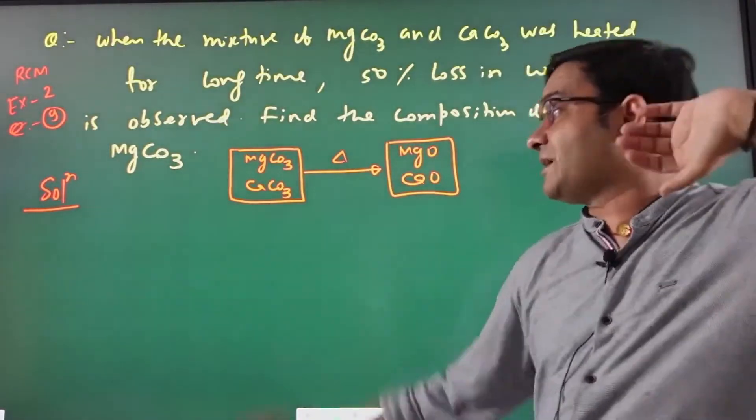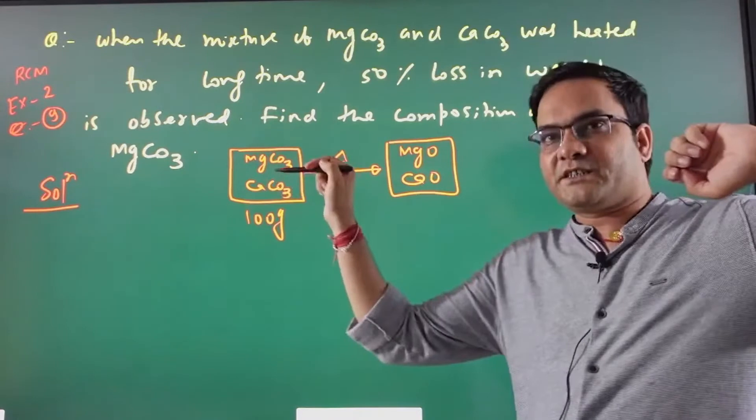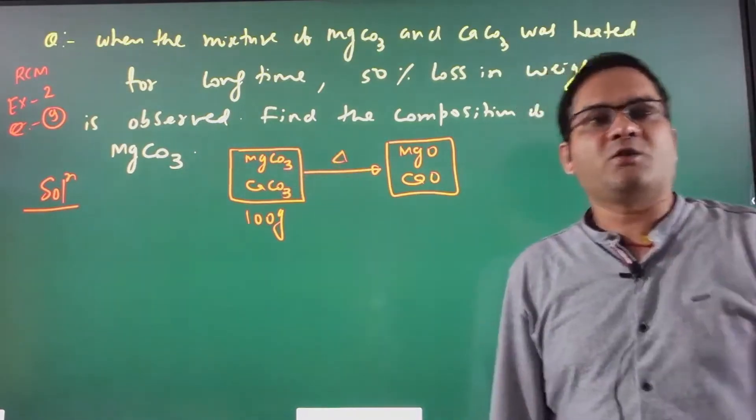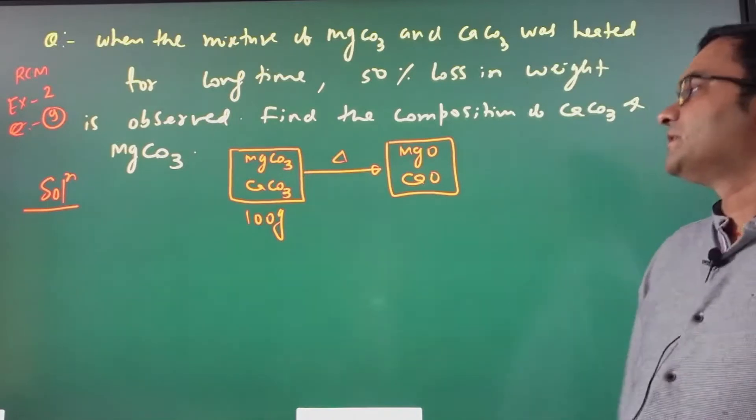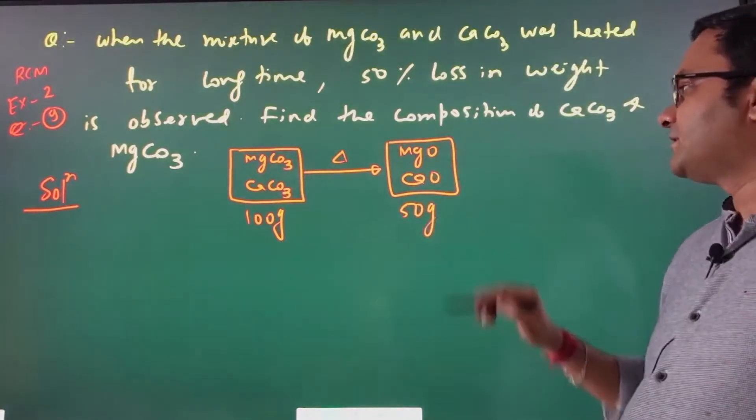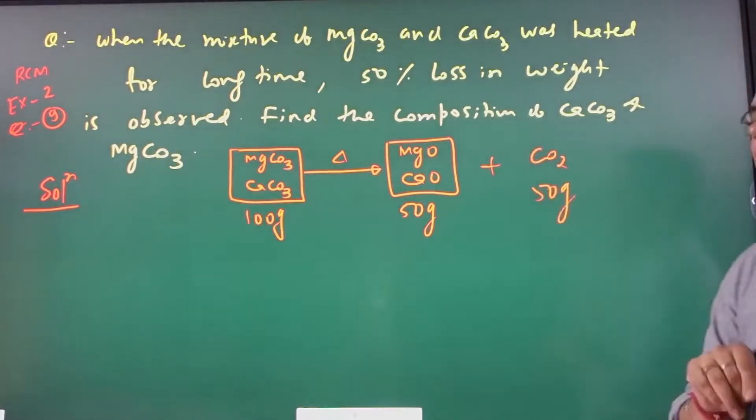Let's assume we take 100 grams of this mixture. The CO2 loss is 50 grams, so the remaining mass is 50 grams.